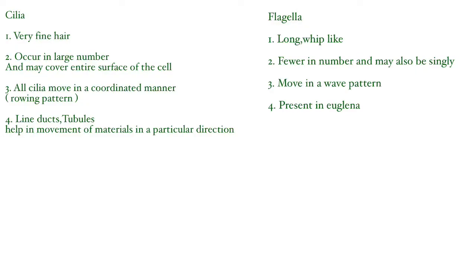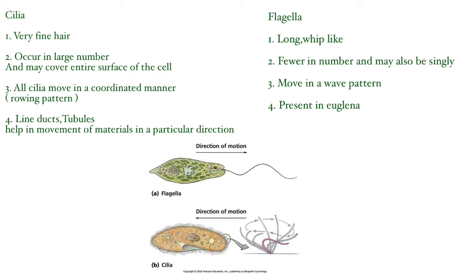We have already come across the term cilia and flagella — both are hair-like projections which help in movement. To distinguish between them: cilia are extremely fine, hair-like, 5 to 20 micrometers long, while flagella are fairly long, whip-like, with an average length of about 100 micrometers.